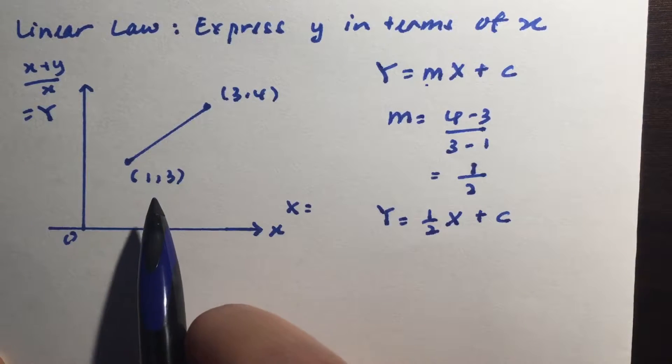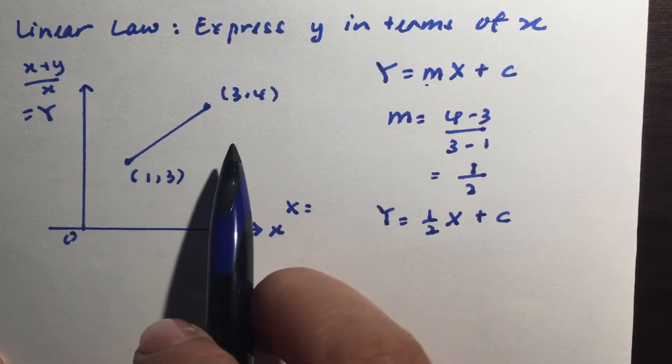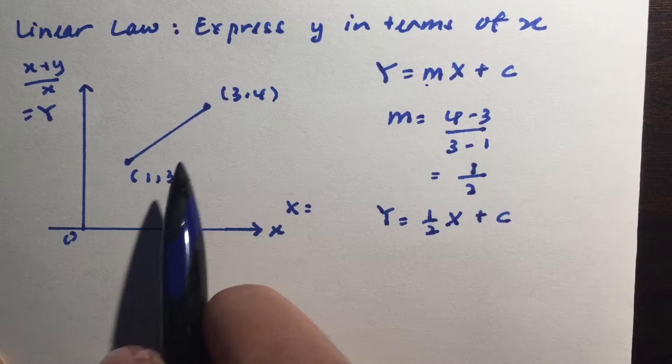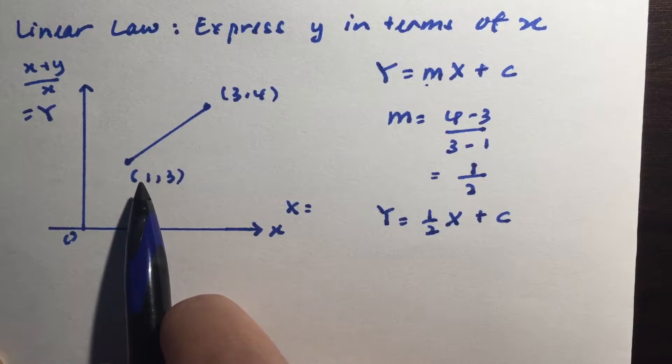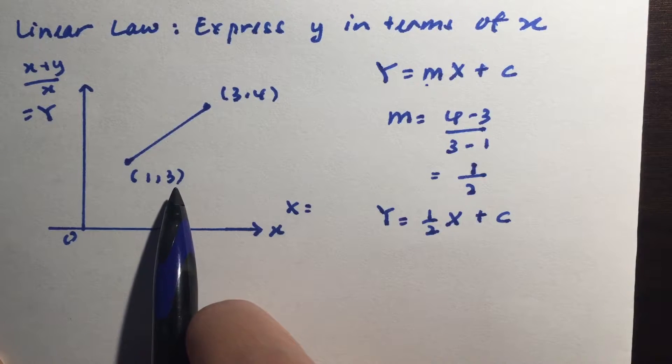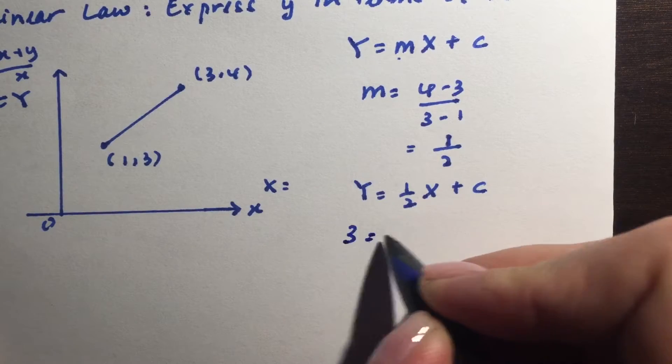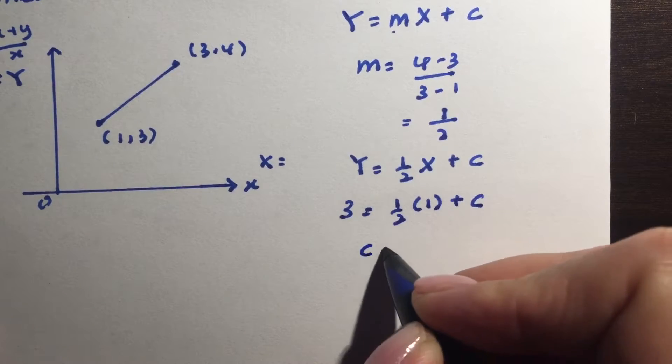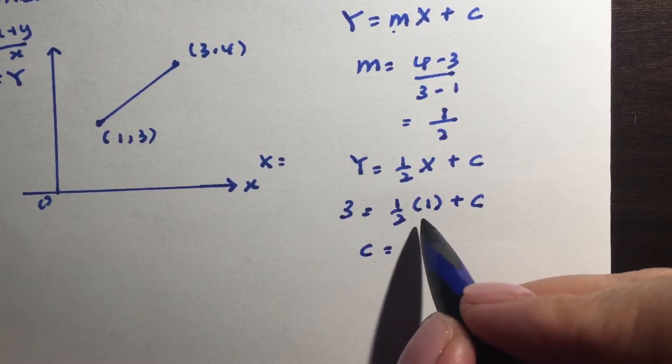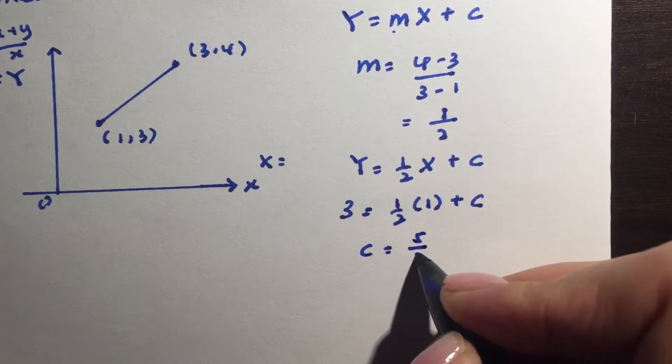So I can use either one of the coordinates and normally I'll try to use the smaller of the two just so that it is easier, but if you use this it's totally fine. In other words when big X is 1, big Y is 3, so I have 3 equals half times big X plus c, so c is the same as 3 minus half which is 5 over 2.